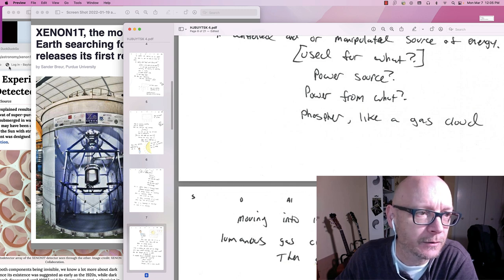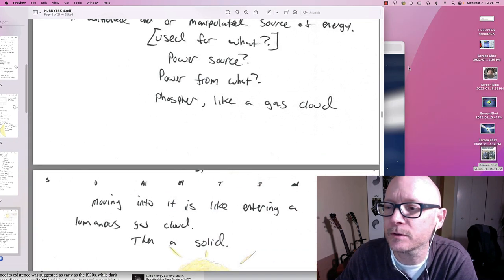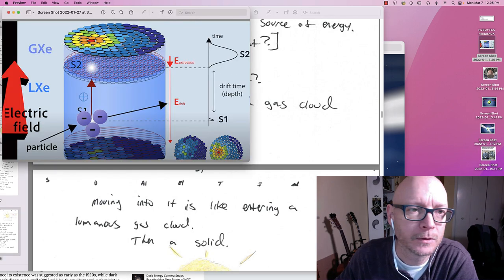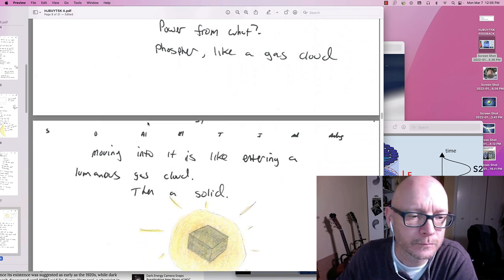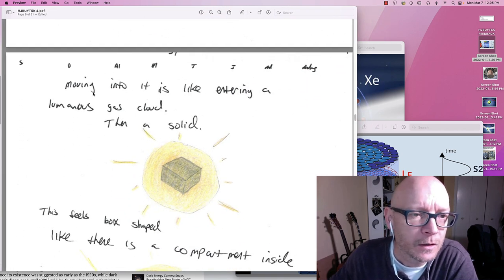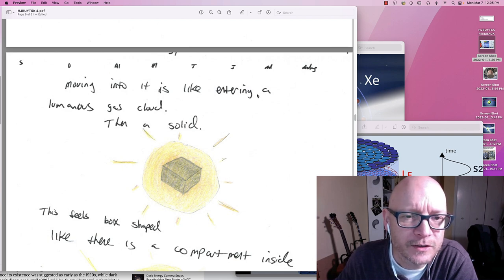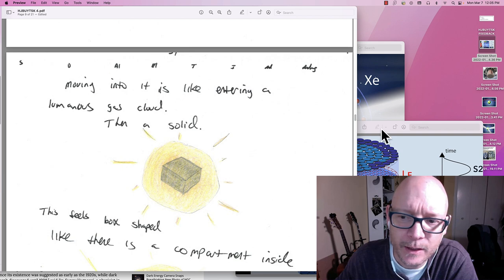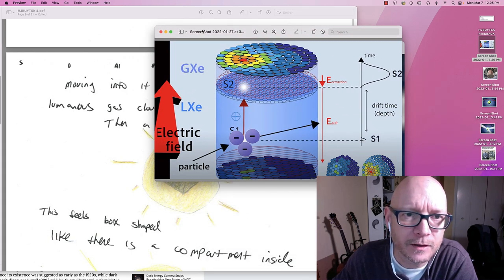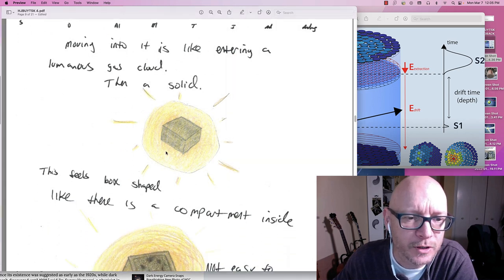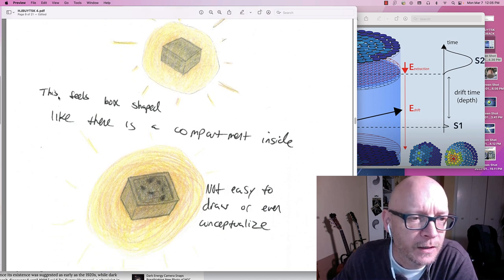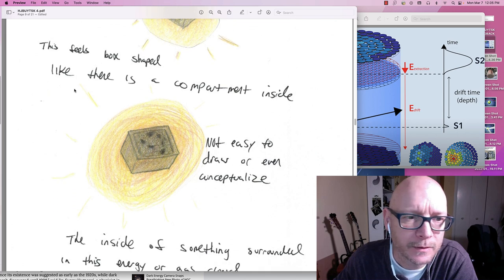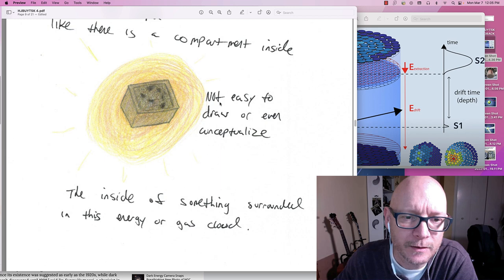Like a gas cloud. Again let me get my images here. Here. This is the xenon gas right here. Moving into it. Is like entering a luminous gas cloud. And then a solid. My gas cloud and then the solid here. This is what I was perceiving. Inside of this gas cloud. There was a solid object in there. This feels box shaped. Like there's a compartment inside. It's not easy to draw. It's not even easy to conceptualize. And it wasn't. It was very difficult for me to even get to this point.